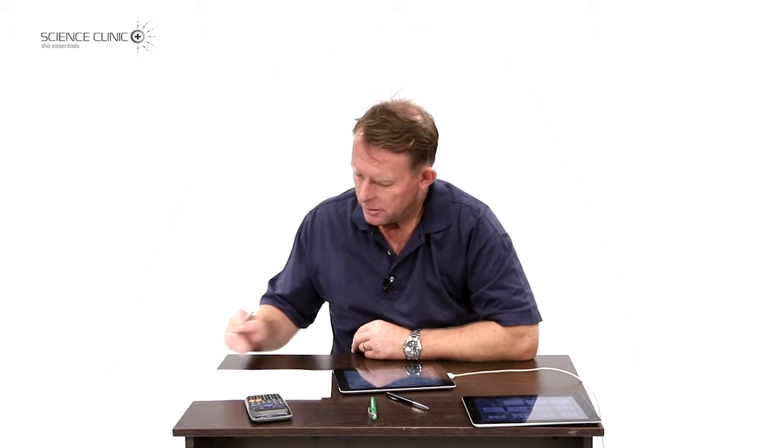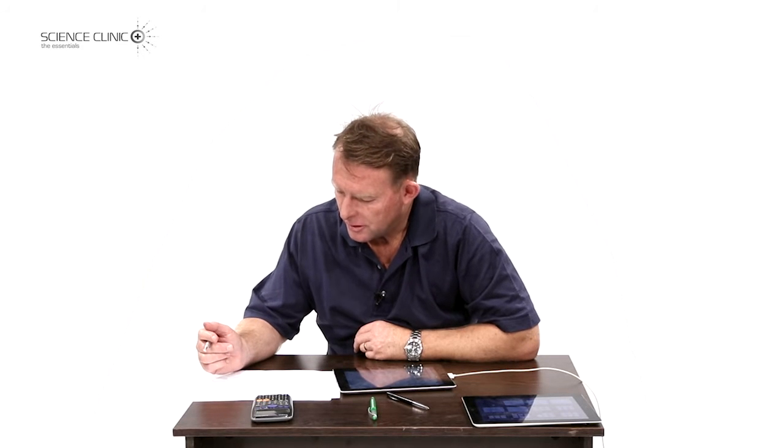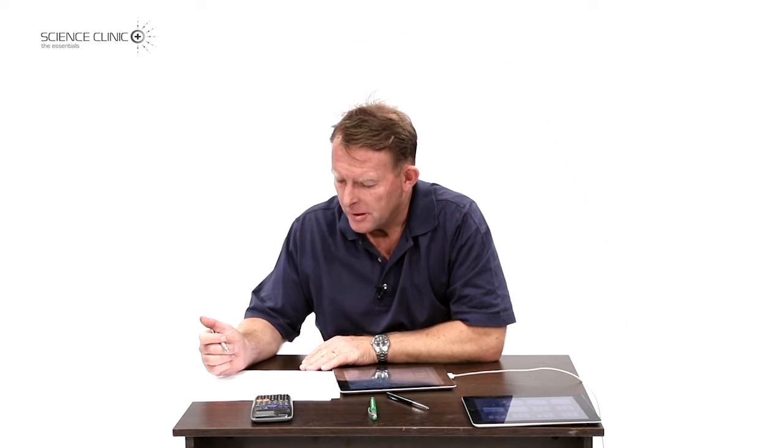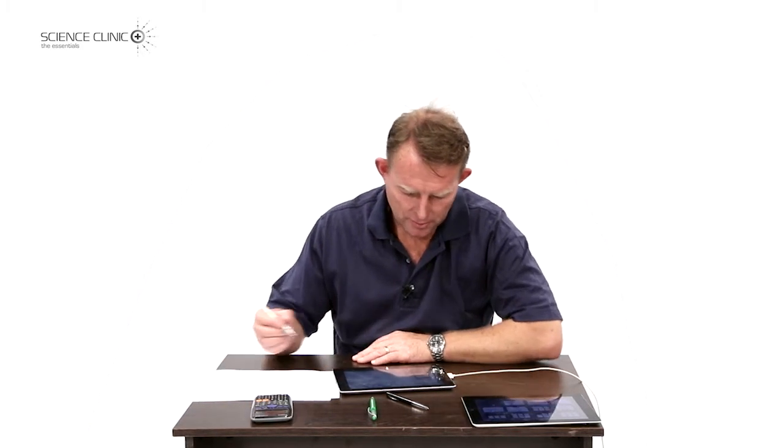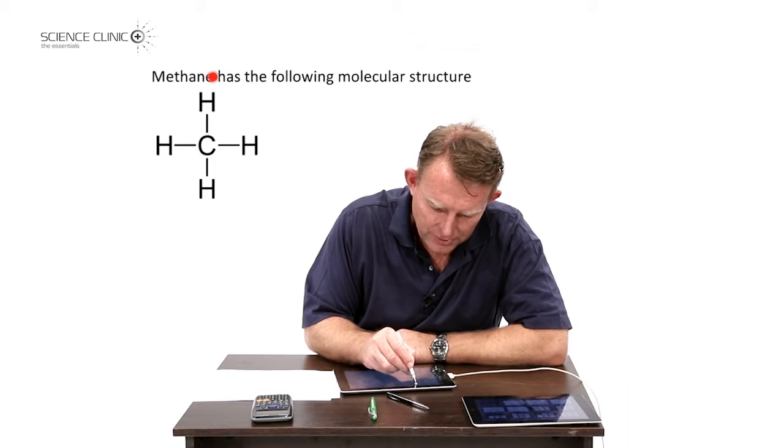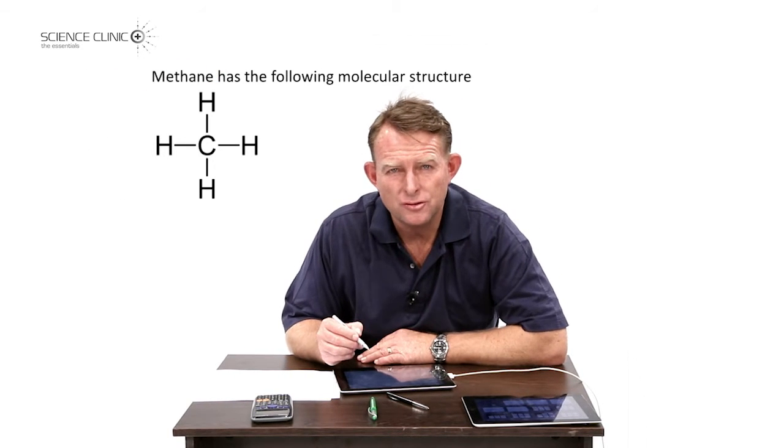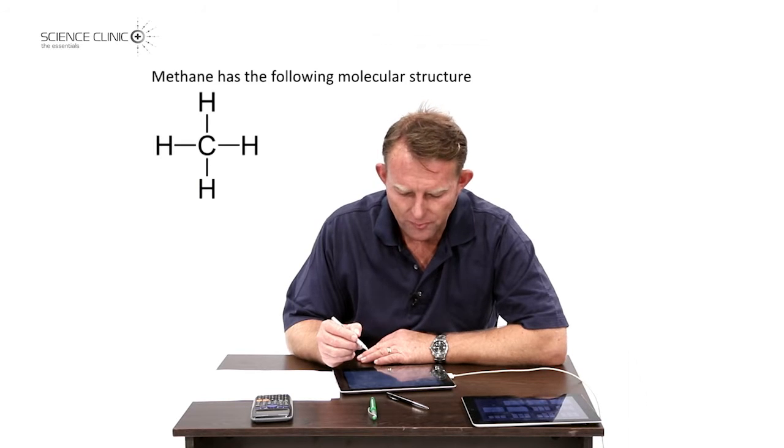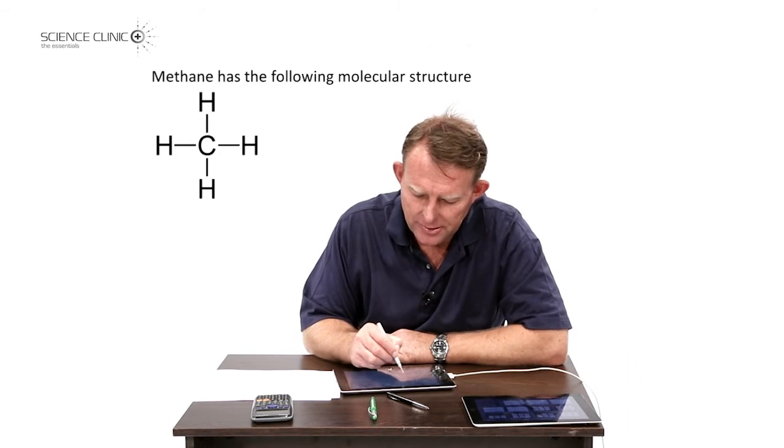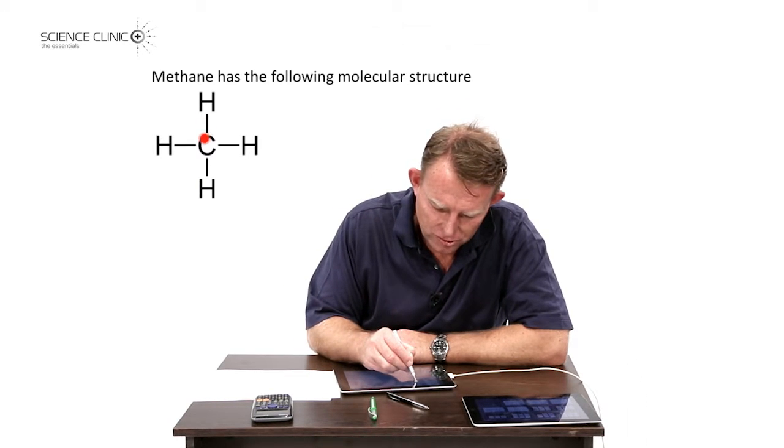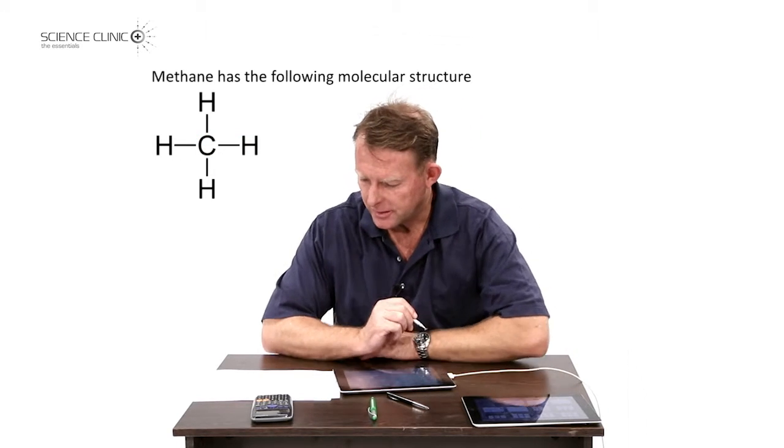We now move on to the next question here, 3.3. It says methane has the following molecular structure. Methane is the name of a compound you should know, it's one of the ones you need to learn off by heart. And they tell us now it has the following molecular structure. So we see that there's a carbon in the middle and it is connected to four hydrogens like that.